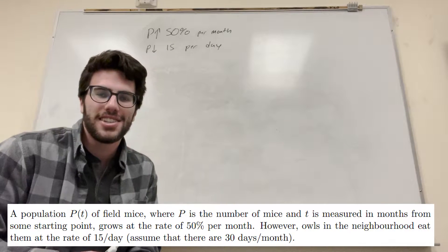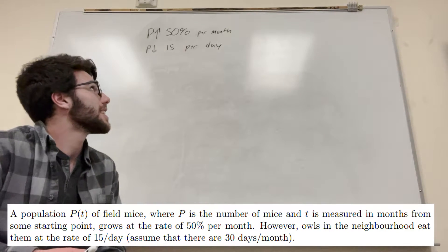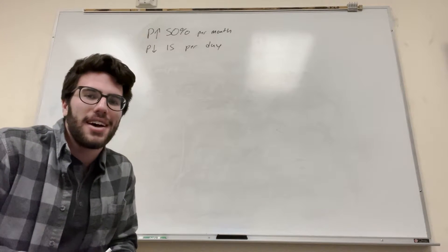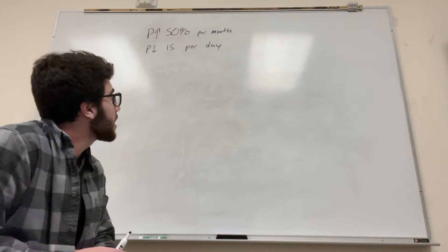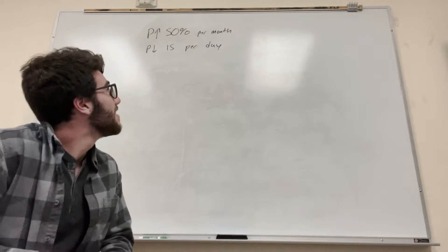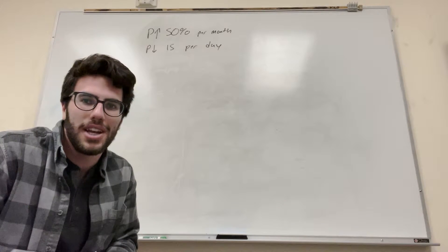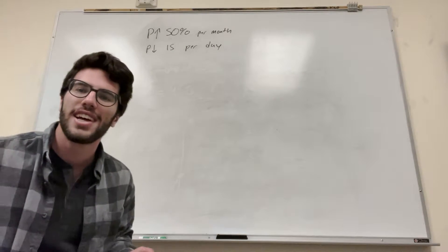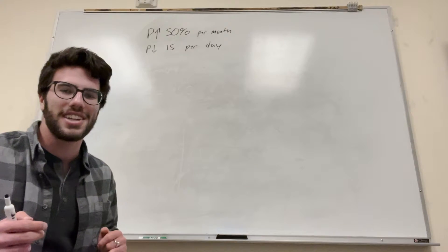What's up, Cal gang? So we have a problem here with some mice and some owls eating them. I'm going to explain the problem. We have a population of mice that increases at 50% per month, which is pretty quick. But they also die at 15 per day. It wants us to figure out what's going on and solve everything. Let's dive into this problem and really understand it.